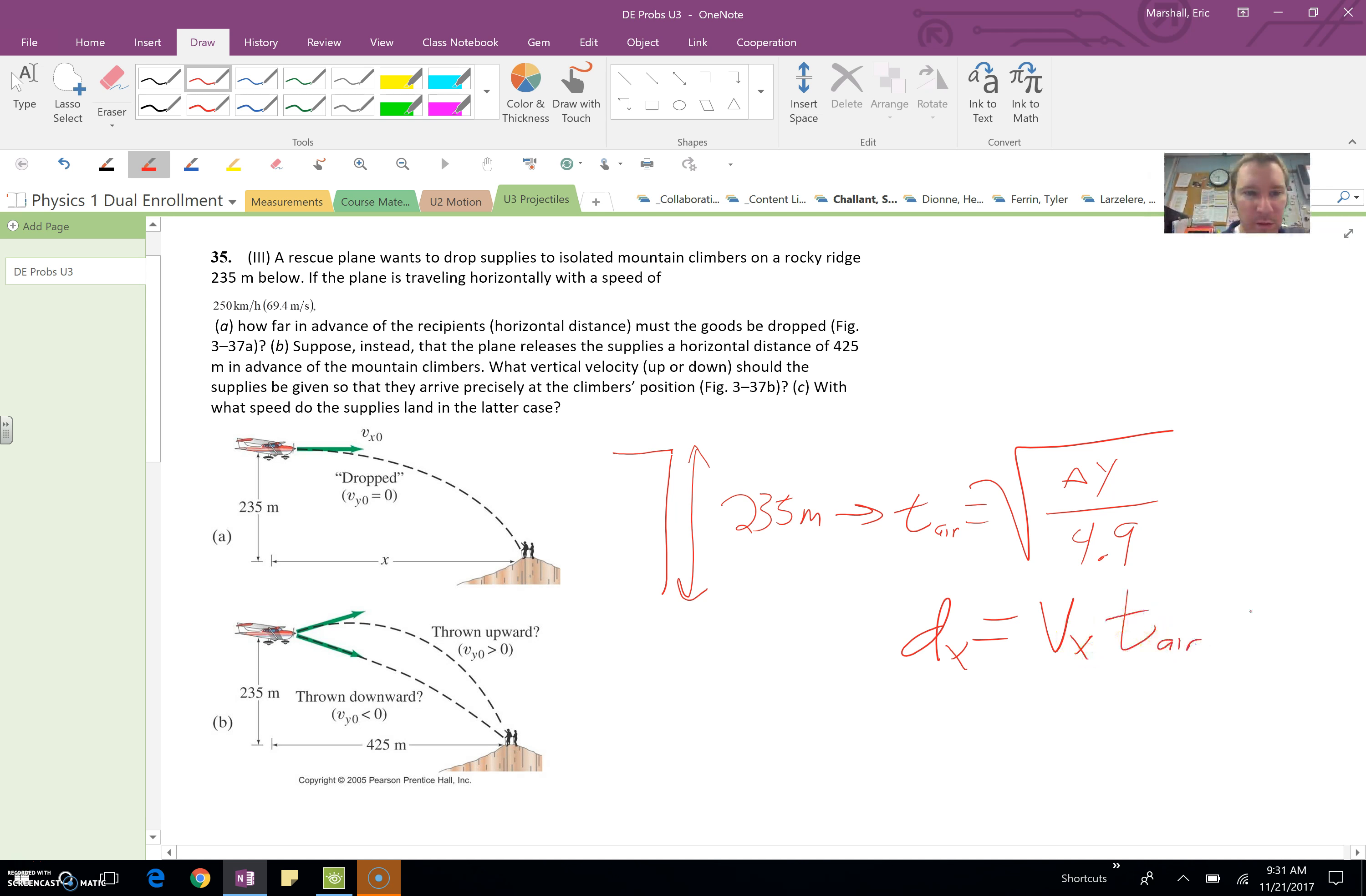The velocity in the horizontal they give you as being some not very easy to work with number like 69.4 meters per second. And that ought to do it for part A. Part B though, you are still 235 meters in the air, but if you give it a vertical speed then the amount of time it's in the air can be very different.